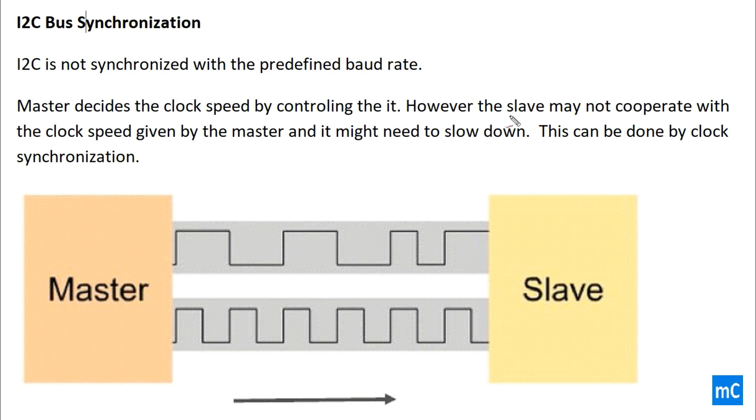However, the slave may not cooperate with the clock speed given by the master and it may need to slow down. This can be done by clock synchronization. Let's see this in this tutorial.